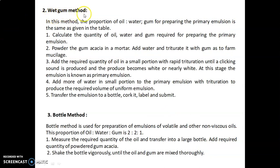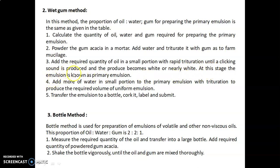The second method is the wet gum method. The proportion of oil to water to gum for preparing the primary emulsion is the same as given in the table. Powder the gum acacia in a mortar, add water, and triturate to form a mucilage. Then add the required quantity of oil in small portions with rapid trituration until a clicking sound is produced and the product becomes white or nearly white — this is the primary emulsion. Then add more water in small portions with trituration to produce the required volume of uniform emulsion.